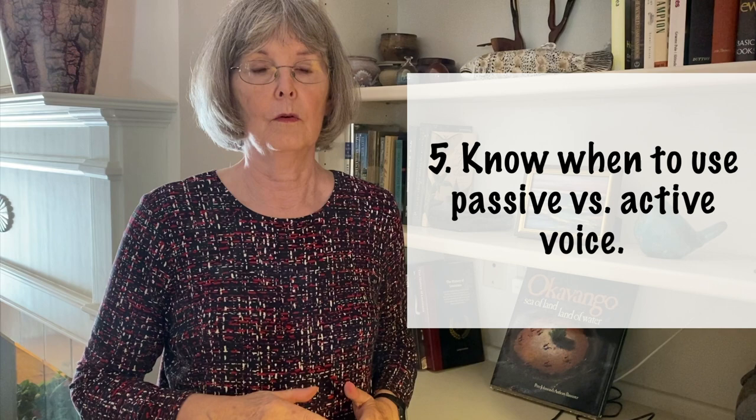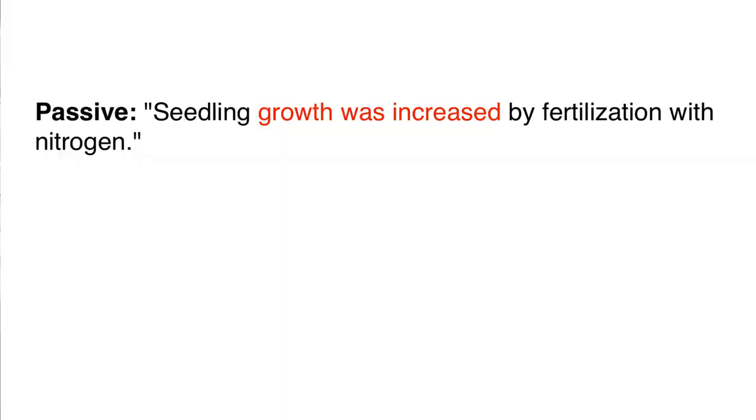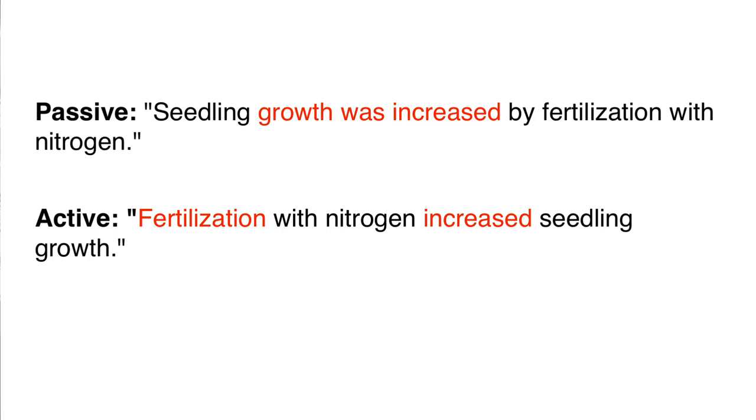Five: know when to use passive versus active voice. More journals these days are encouraging use of active voice, but many scientists are still being taught to write solely in passive voice, so it's important to know the difference and when to use them. In passive voice, the subject of the sentence is acted upon by the verb. Passive construction has been the traditional choice in scientific writing because it conveys objectivity, but it can also sound robotic or stilted. In active voice, the subject is doing the action expressed in the verb. Active voice is usually clearer, more direct, and requires fewer words. Use of active voice can enliven your writing and make your material more readable.